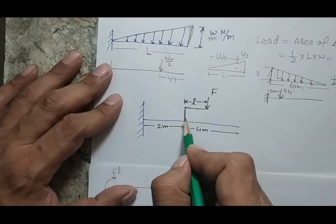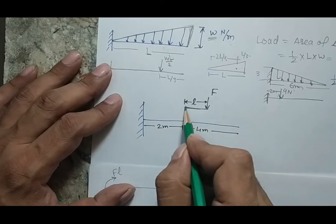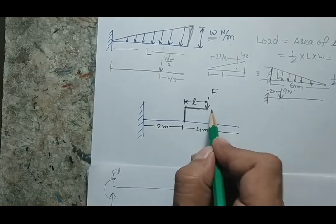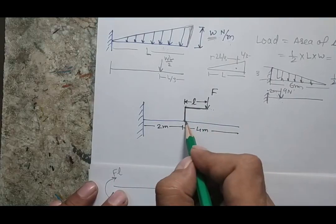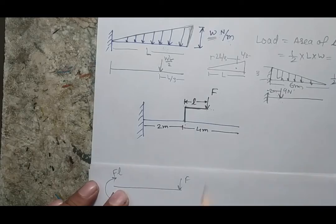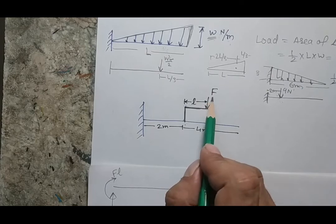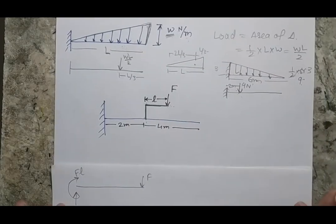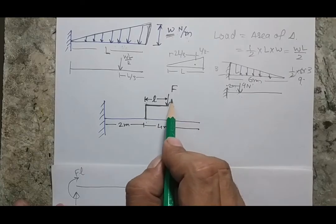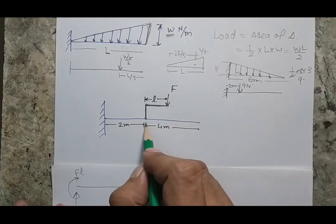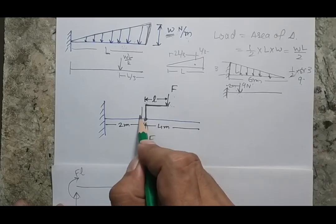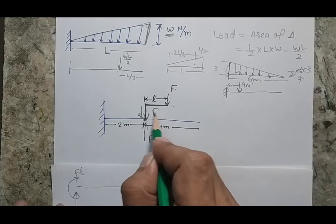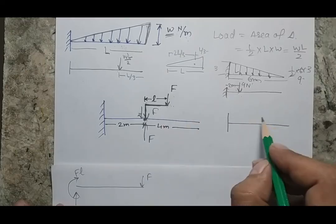One more type of loading we commonly see is when a force F is applied at a distance from the beam via a rigid connection. To find the exact loading on the beam, we need to make a force-couple diagram — a concept studied in mechanics. We add two equal and opposite forces F at the connection point on the beam: one upward and one downward.